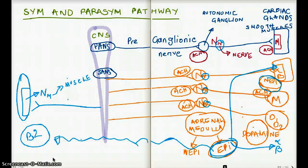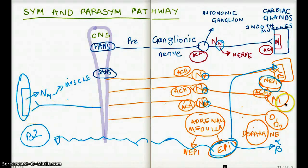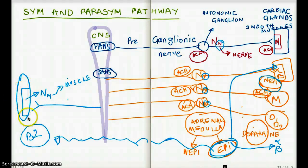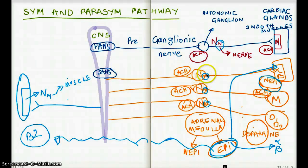Those are all the sympathetic pathways. Now let's quickly talk about the somatic nervous system. In the somatic nervous system, we only have one nerve — it's not disynaptic. The somatic nervous system stimulates a muscle, and the receptor is going to be nicotinic — but these nicotinic receptors are named NM, where M stands for muscle. In the sympathetic pathways, the nicotinic receptors were NN, where N stood for nerve.